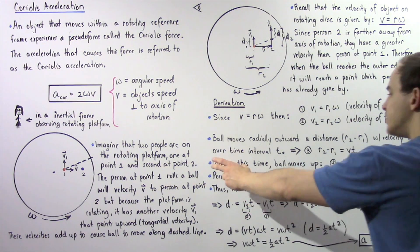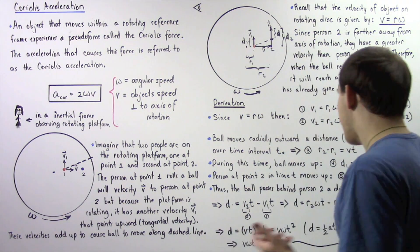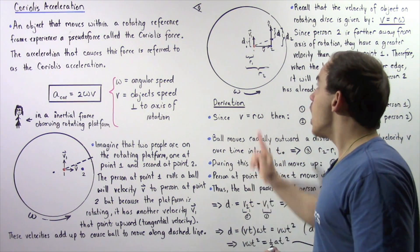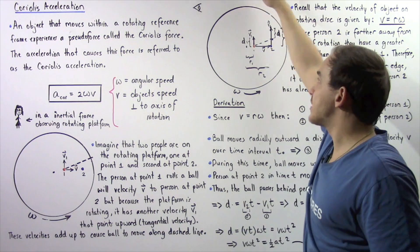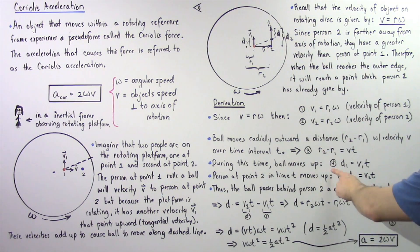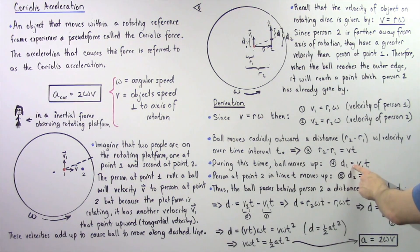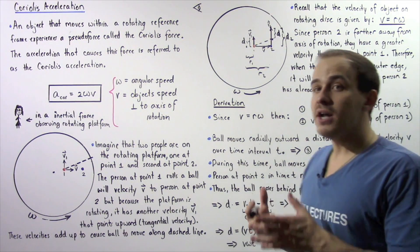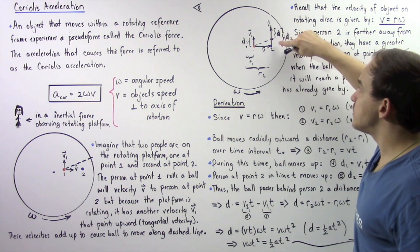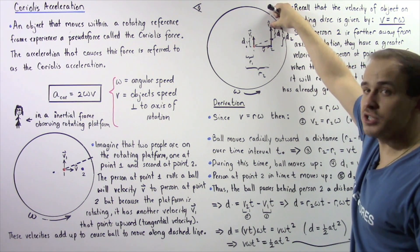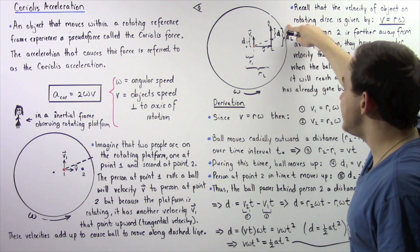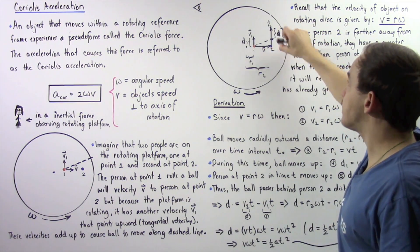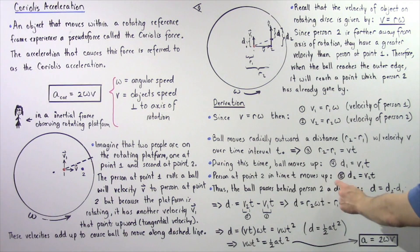During this same time interval t, the ball moves an upward distance d1, so equation 4 is: d1 equals V1 multiplied by t. For person 2, who traveled from position 2 to a new position, the distance d2 is given by equation 5: d2 equals V2 multiplied by t.